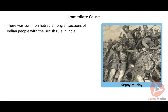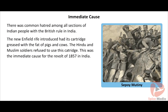Indian people from all sections were unhappy with the administration of the British in India. In the year 1857, a revolt broke out against British rule. The immediate cause was the introduction of the new Enfield rifle, whose cartridge was greased with the fat of pigs and cows, which was refused by Hindu and Muslim soldiers. This resulted in the Sepoy Mutiny of 1857.